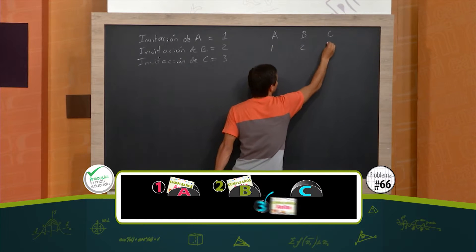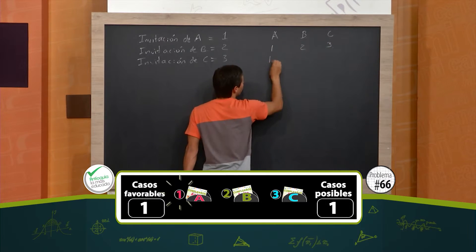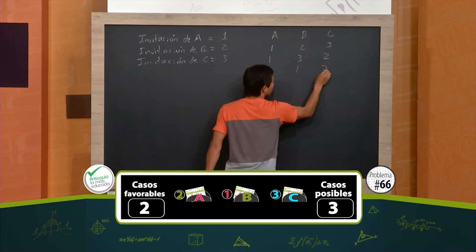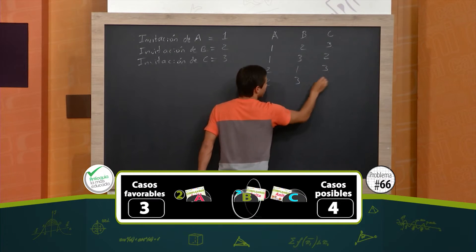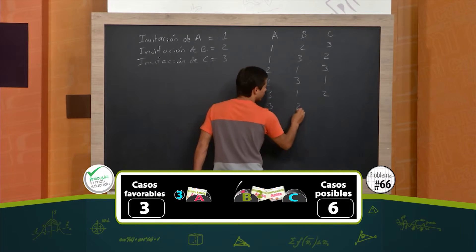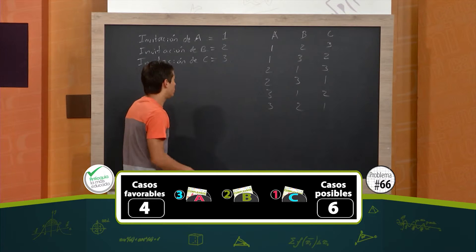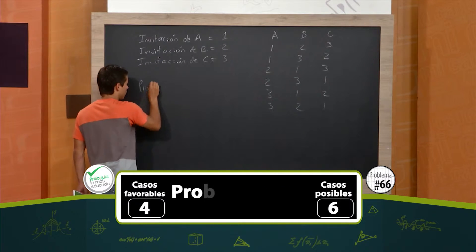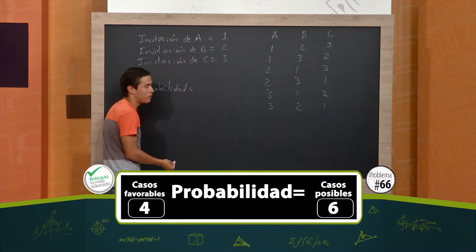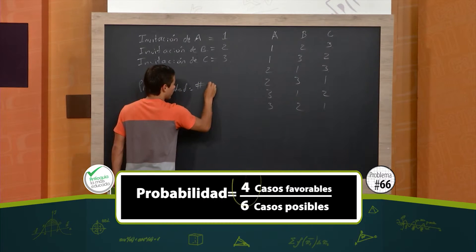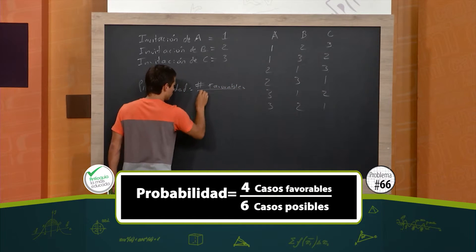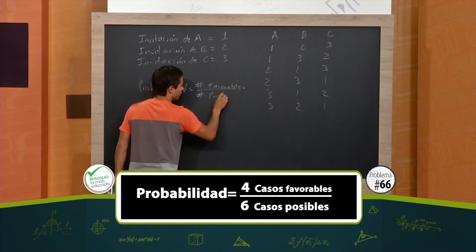Que llegue 1, 2, 3 o 1, 3, 2 o 2, 1, 3 o 2, 3, 1 o 3, 1, 2 o 3, 2, 1. Entonces, la probabilidad es número de casos favorables sobre número de casos posibles.